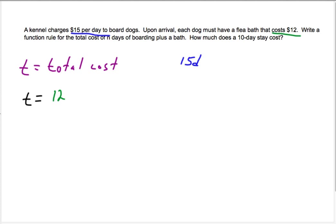So write, oops, I wrote D. They want to use N. So I'll use N. There, 15 times N. So we're adding $15 per day. Write a function rule for the total cost of boarding plus a bath. Well, here's the boarding. Here's the bath. That's the total cost. So here's our function rule. Now, how much does a 10-day stay cost?